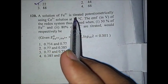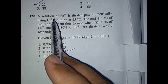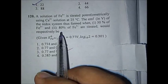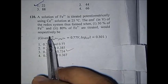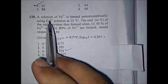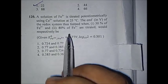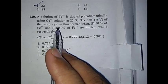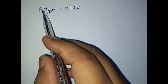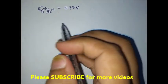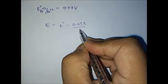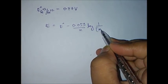The next question says that a solution of Fe³⁺ is titrated potentiometrically using Ce⁴⁺ at 25°C. You need to find the EMF of the redox system when 50% and 80% of Fe³⁺ is titrated. Only E° of Fe³⁺/Fe²⁺ is given, so we cannot use cerium's standard electrode potential. We use only the given information.